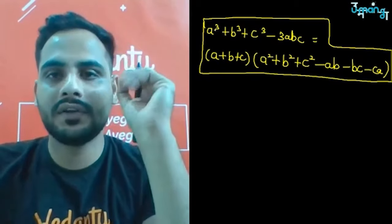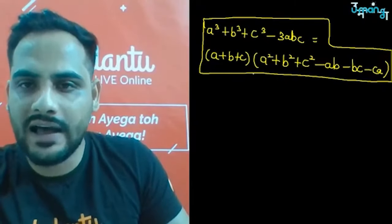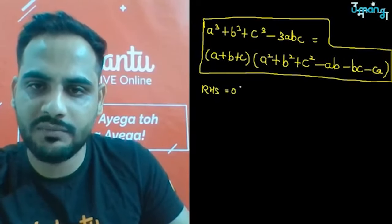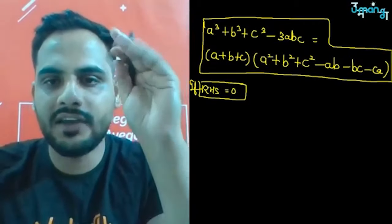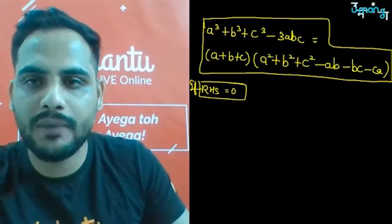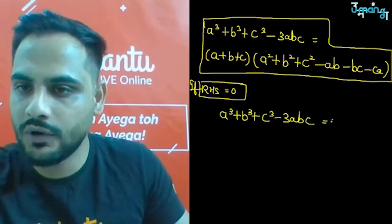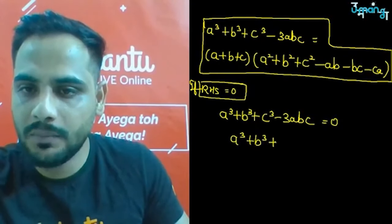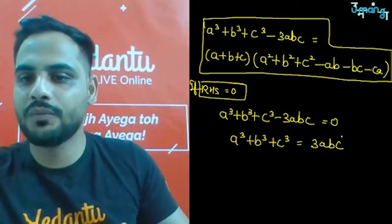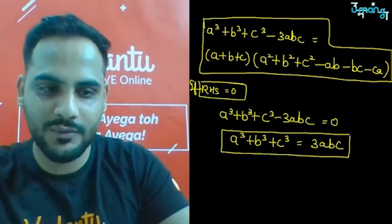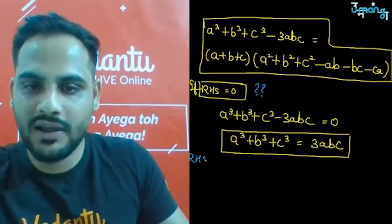If the RHS becomes zero, then a³+b³+c³-3abc = 0, which means a³+b³+c³ = 3abc. To make RHS zero, since it is a product of two factors, at least one must be zero. So either (a+b+c) = 0, or (a²+b²+c²-ab-bc-ca) = 0.